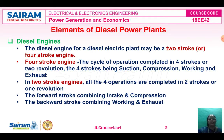The diesel engine is used as a prime mover, which is used to produce mechanical energy. The diesel engine may be a two-stroke engine or a four-stroke engine. In a four-stroke diesel engine, the cycle of operation is completed in four strokes or two revolutions. The four strokes are: suction stroke, compression stroke, working stroke, and exhaust stroke.